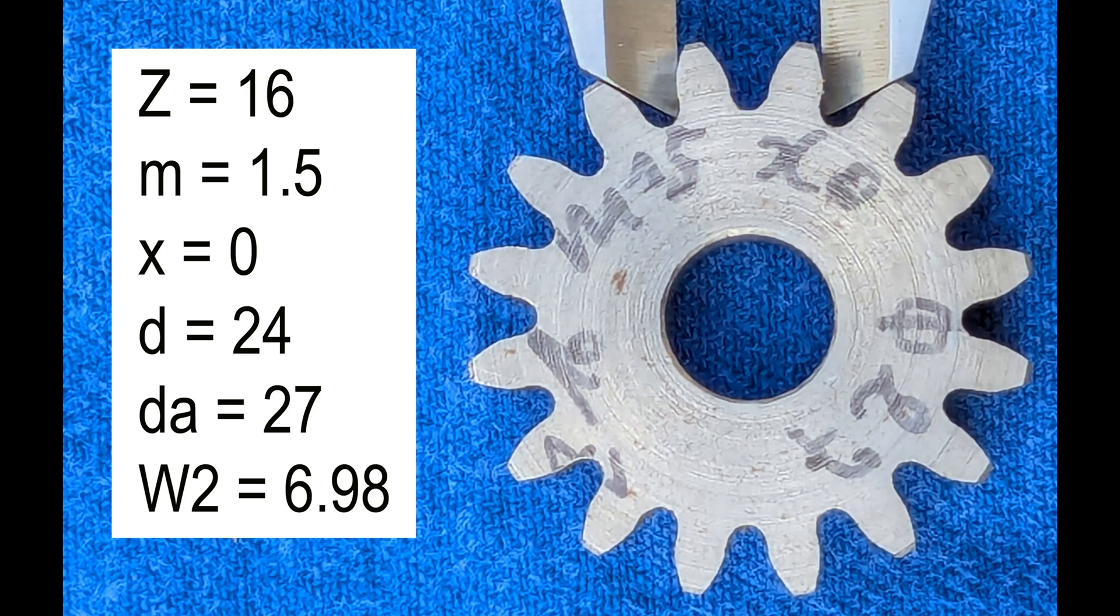So, the PCD disc diameter is 47.4 mm, as twice the gear PCD less the wire diameter. Machine settings: 180 strokes by minute, the maximum for my shaper.